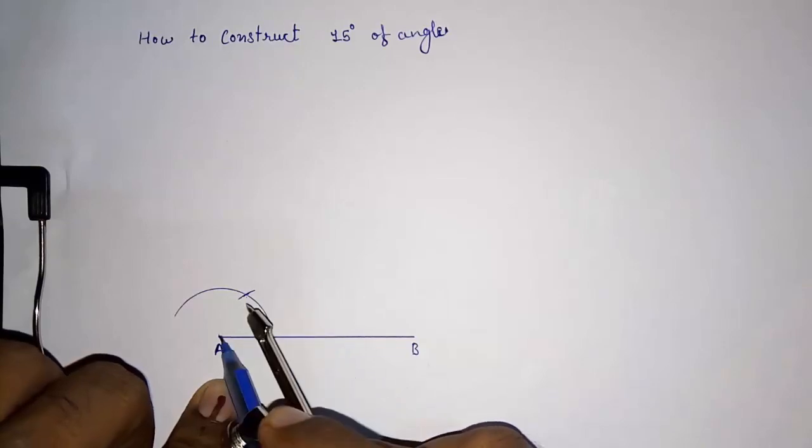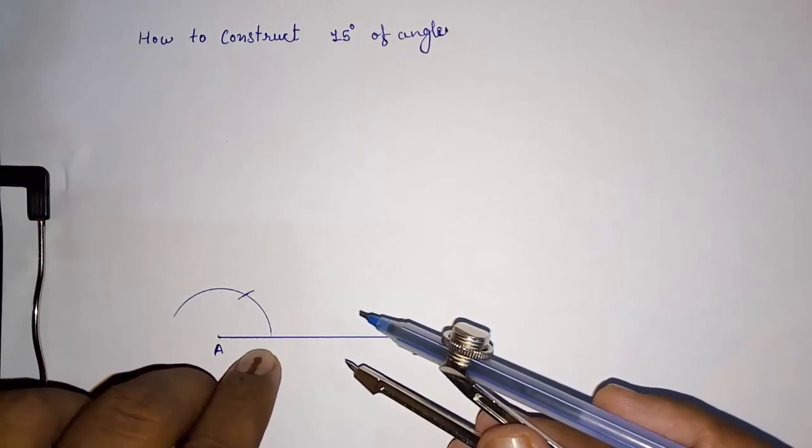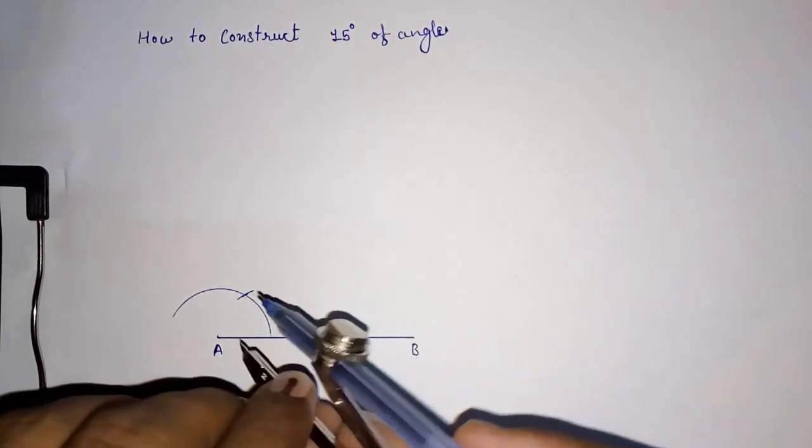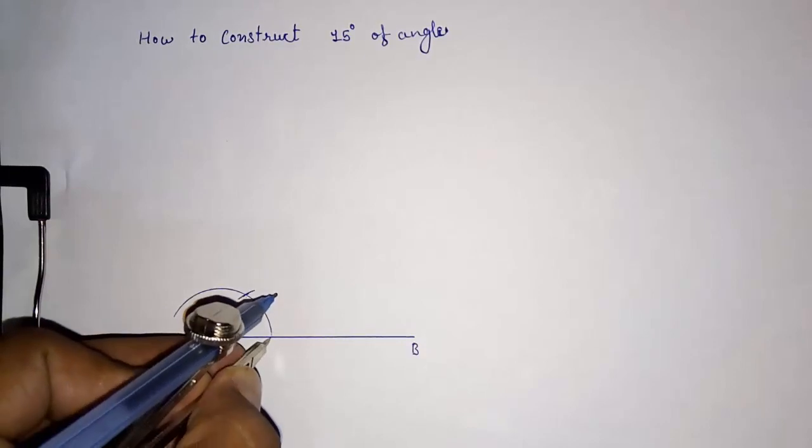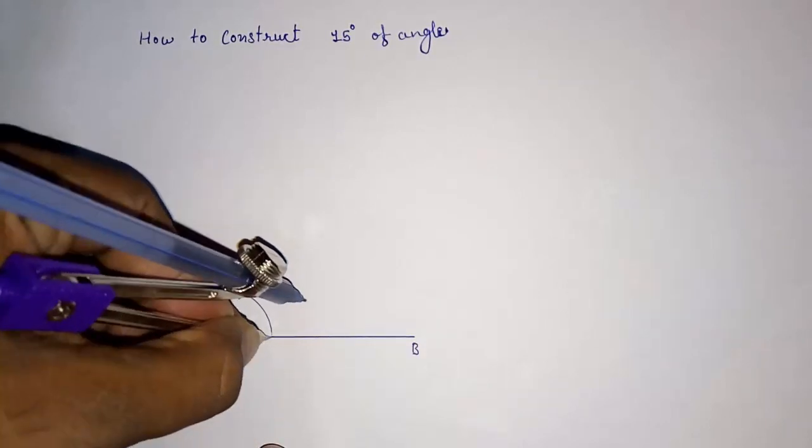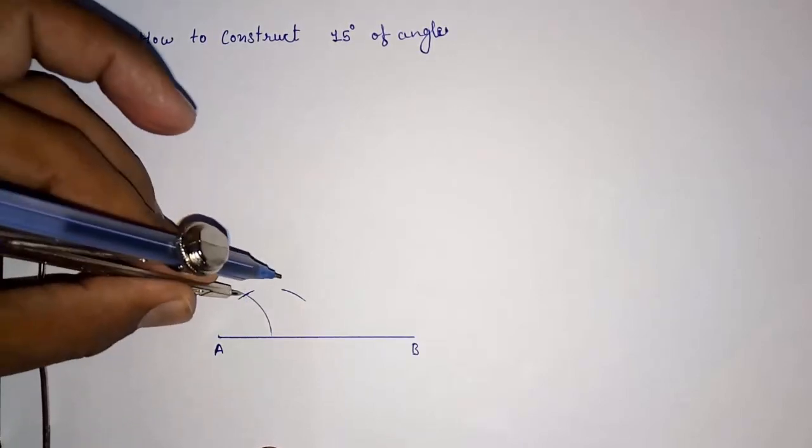I'm drawing it. And again, you have to draw another arc from this 60-degree point on that side only, where both arcs will intersect.